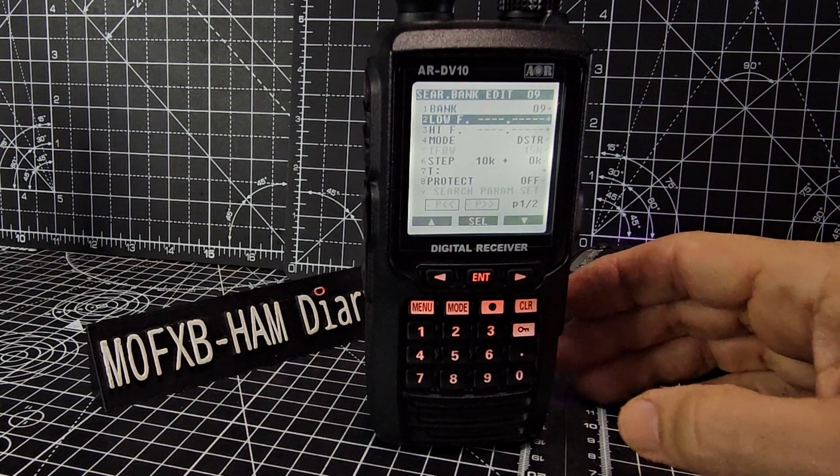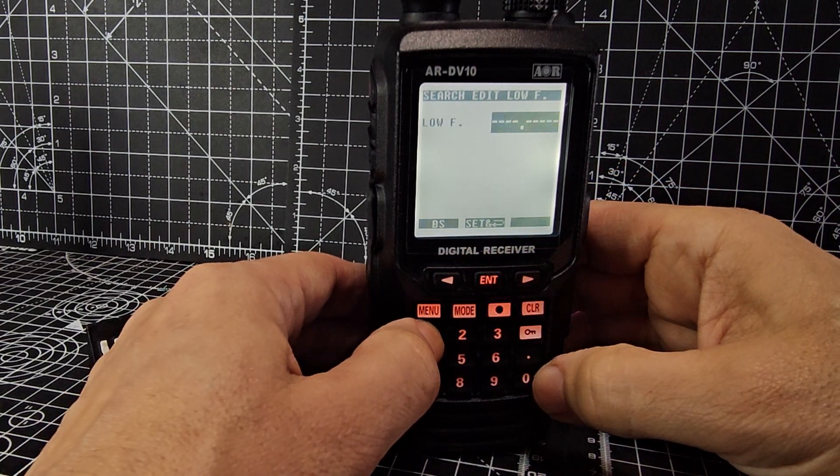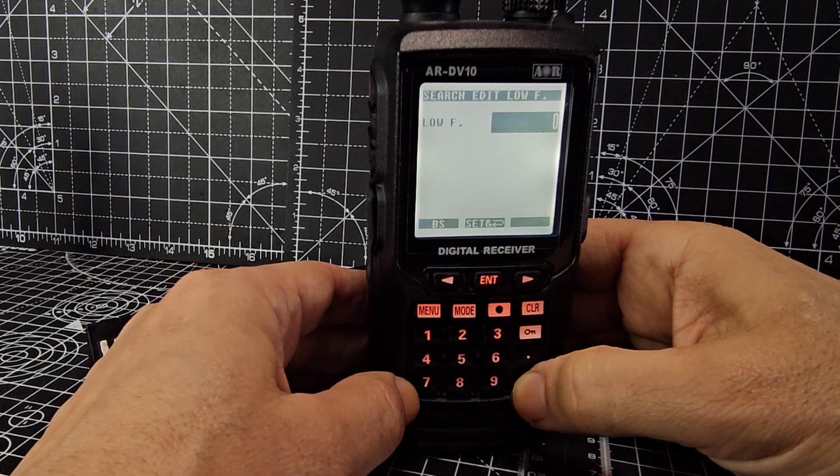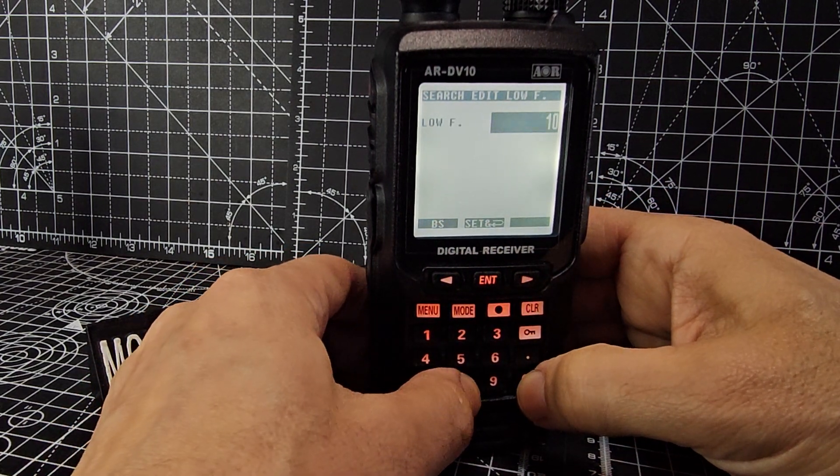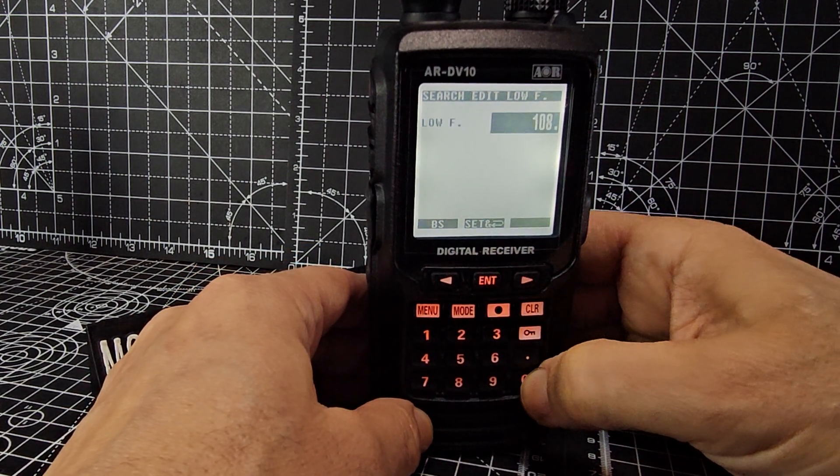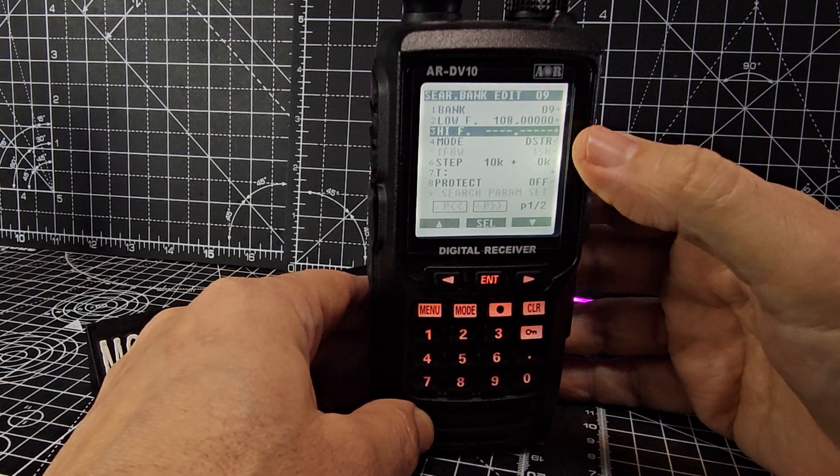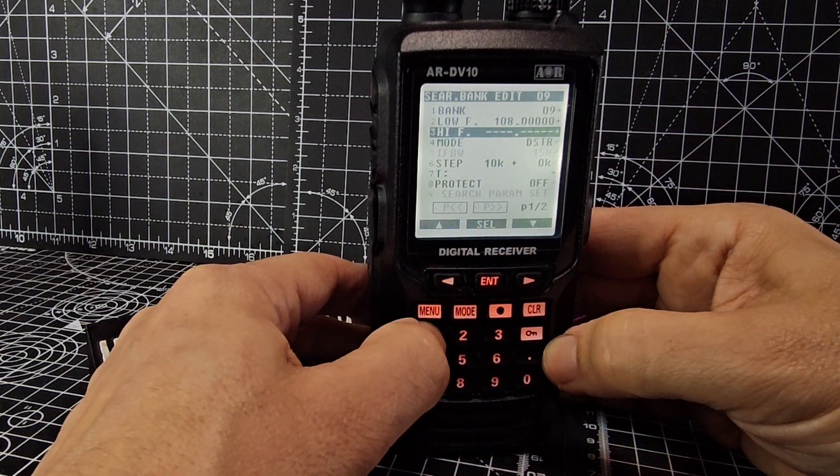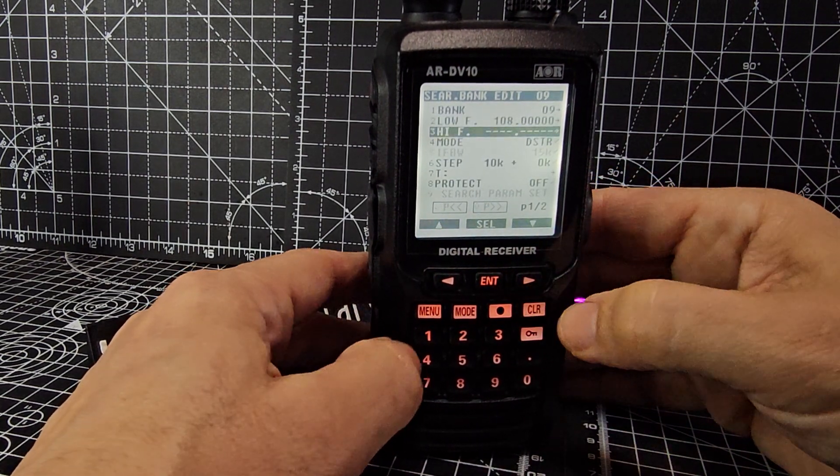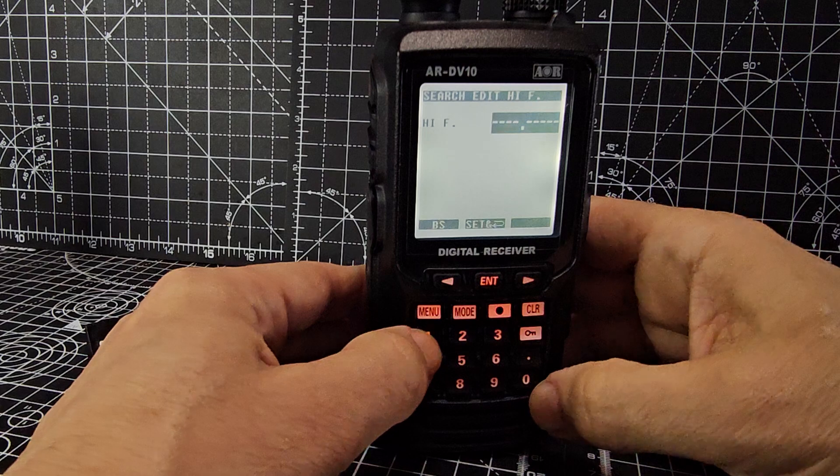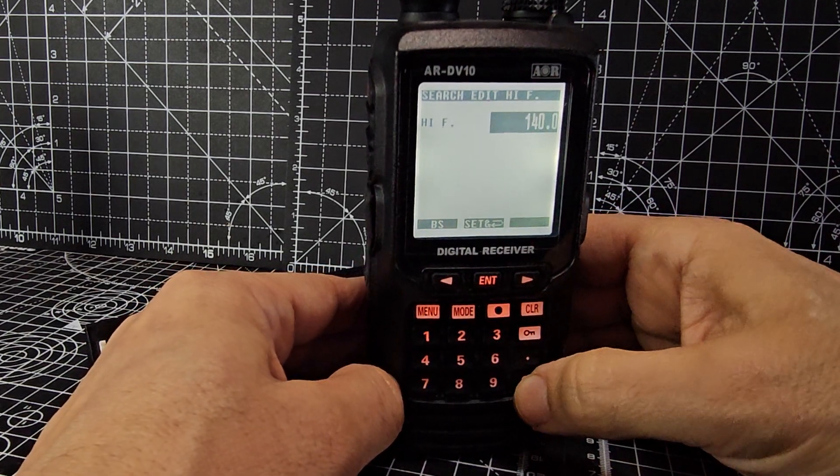Now we need to put the start frequency. So we'll put in, enter. We're going to go, I think we don't need to do the naught. So we're going to go enter and we just go 108.00 megahertz, enter, and then the end search. So we're going to go, oops, gone too fast there. Keep going down the list. Enter, and then I'm going to put 140.0 megahertz.